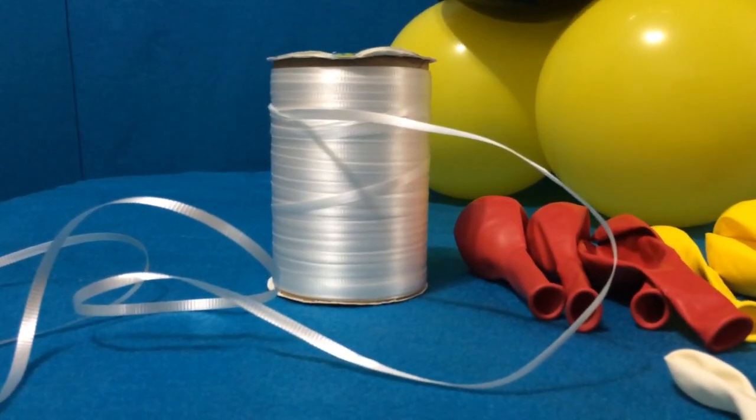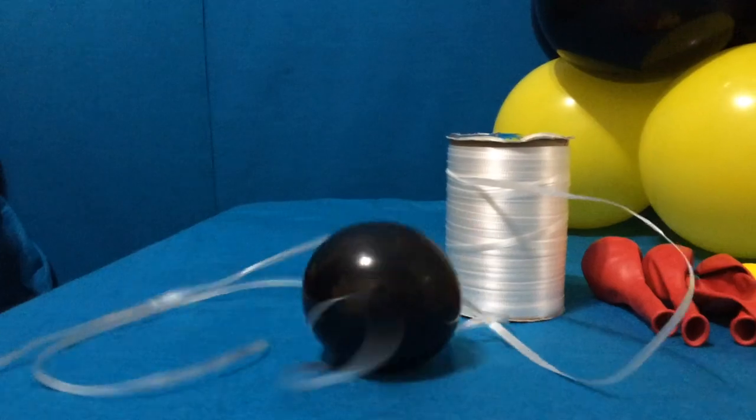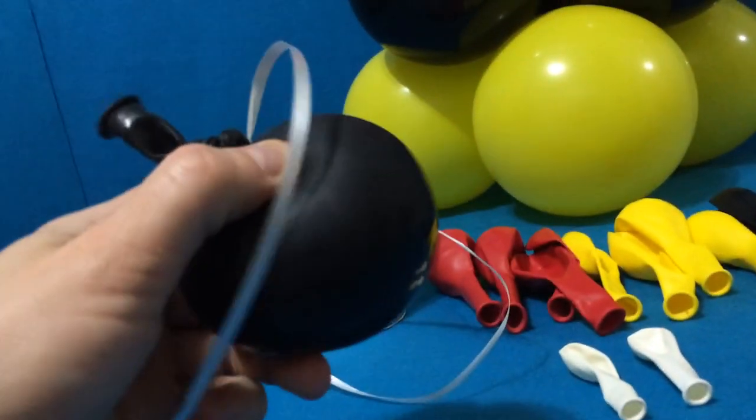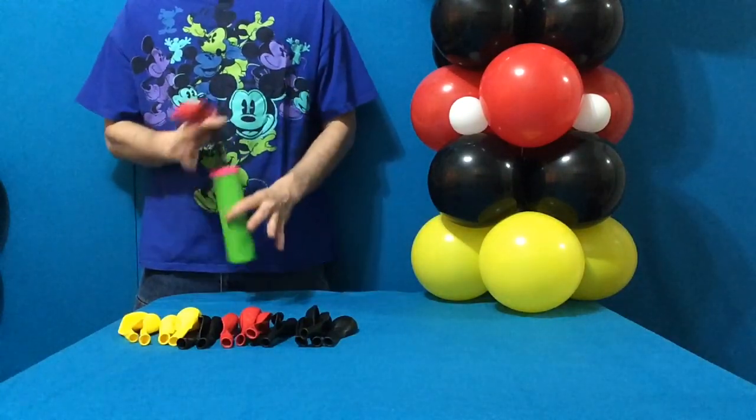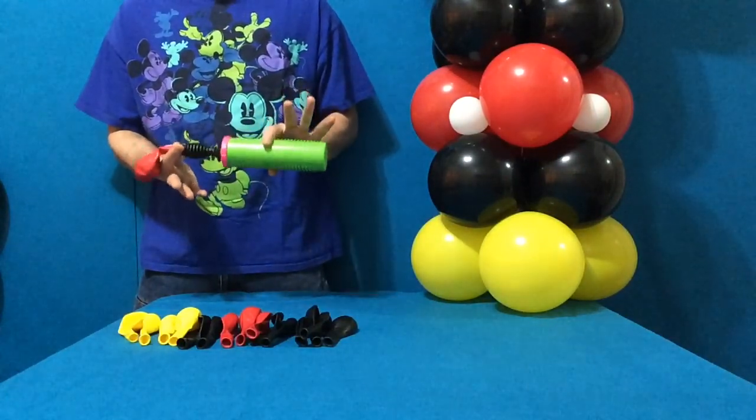It all comes together with a spool of dollar store ribbon and an easy-to-make balloon weight. Let's begin by inflating all of our rounds equally. 7 full pumps with a Qualitex hand inflator.